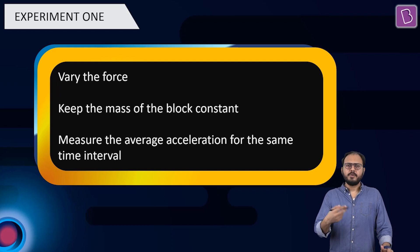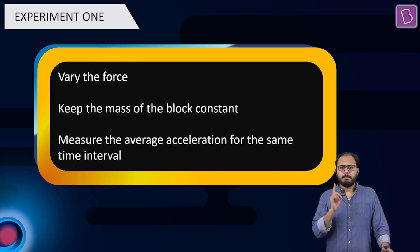You vary the force: f, 2f, 3f, 4f, so on and so forth. But you keep the mass constant. And you measure the average acceleration for the same time interval. In other words, block remains the same. Time is between 0 to T. You keep changing the force.